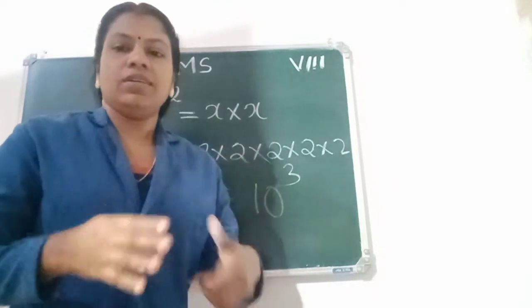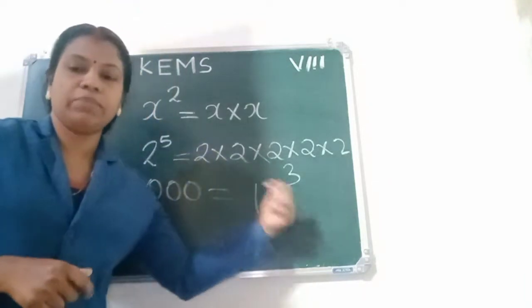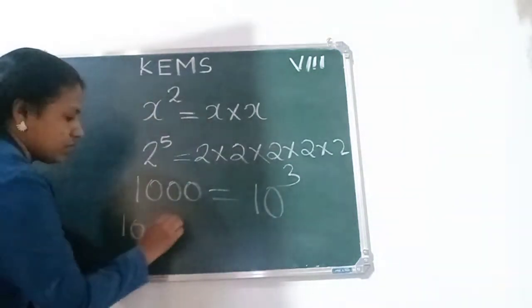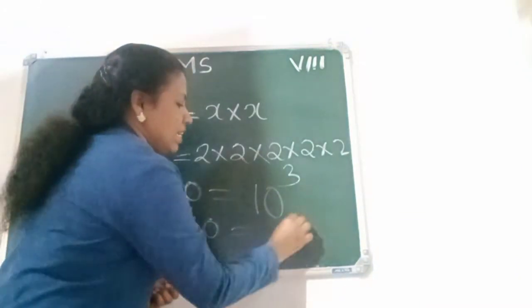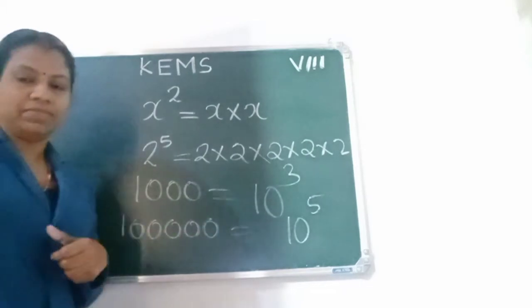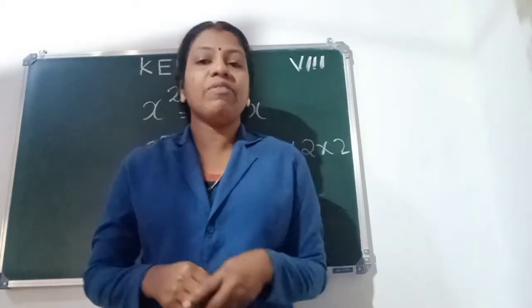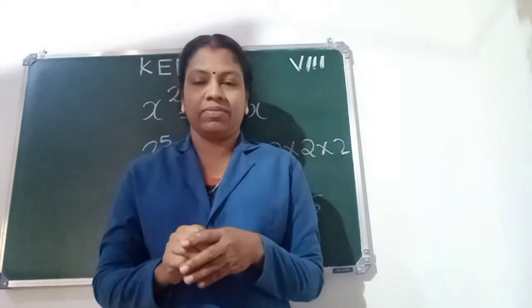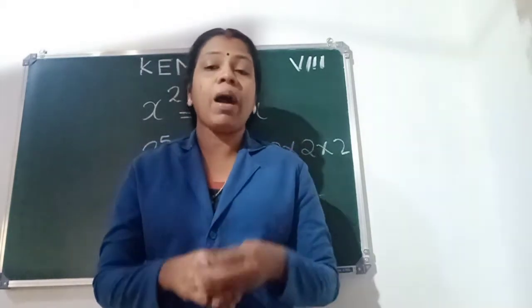How can you write 1,000,000 in power notation? 1,000,000 equals 10 power 6 — there are 6 zeros here. So that is the power notation. The word 'exponents' means power or power notation itself.